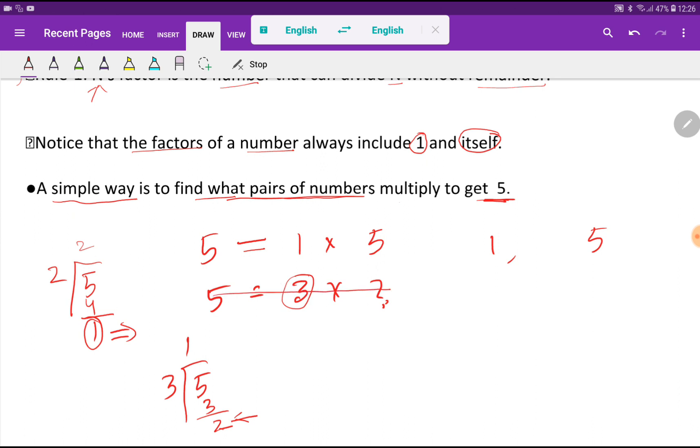The question is, should you stop here? To check, you have 3 squared equals 9. 9 is greater than 5. Greater than indicates that you should stop. So the only factors of 5 are 1 and 5.